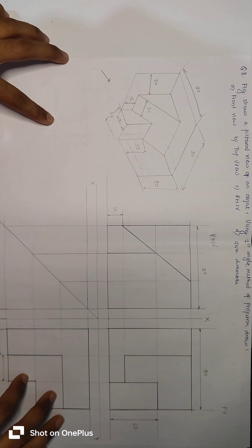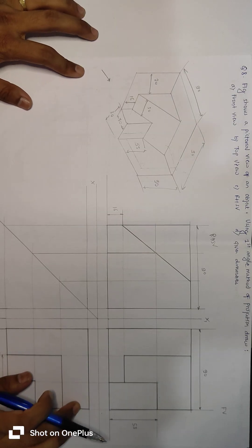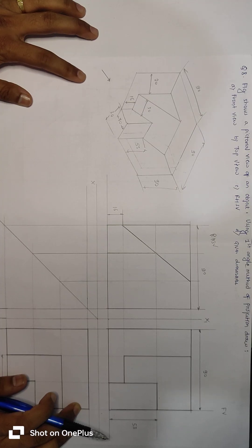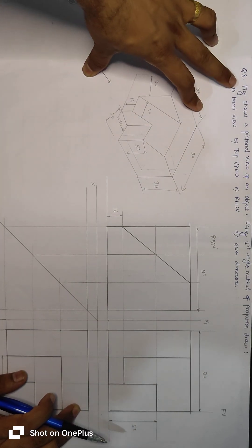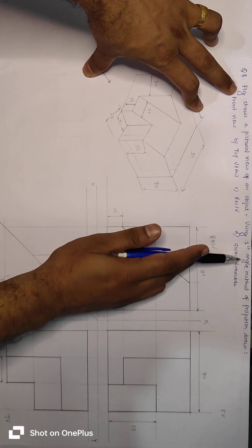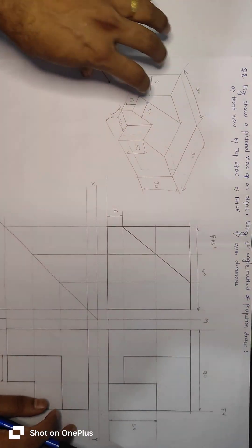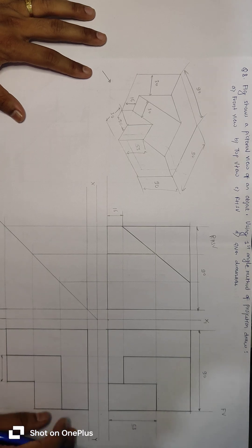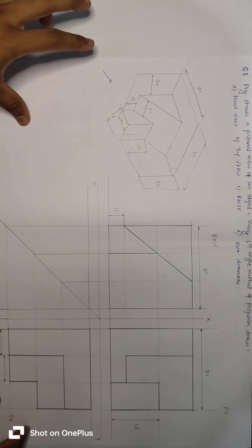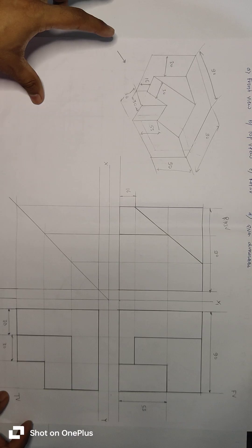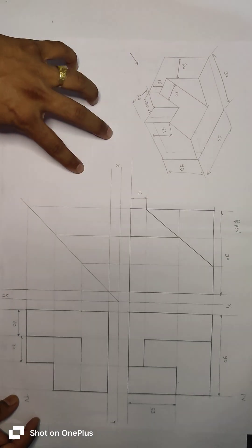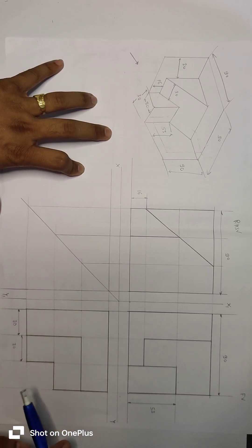Question 8 is also on orthographic projection with no sectional views. The figure shows a pictorial view of an object. Using the first angle method, draw the front view, top view, right-hand side view, and add dimensions. This question was also easy. Five marks for each view and one mark for dimensions.